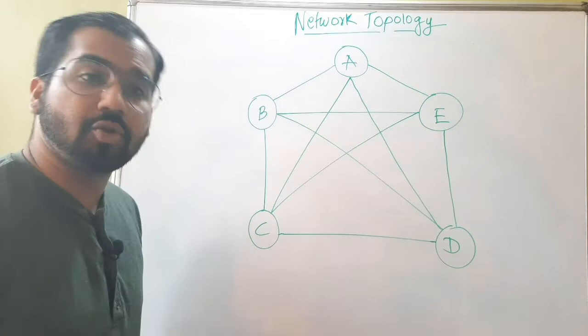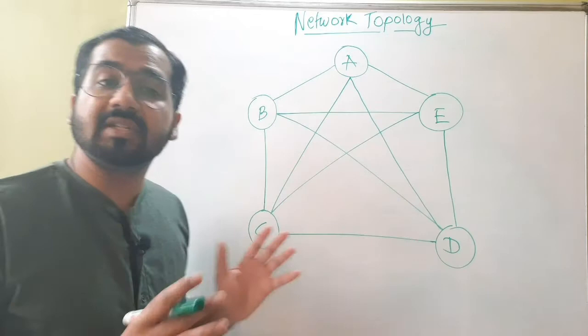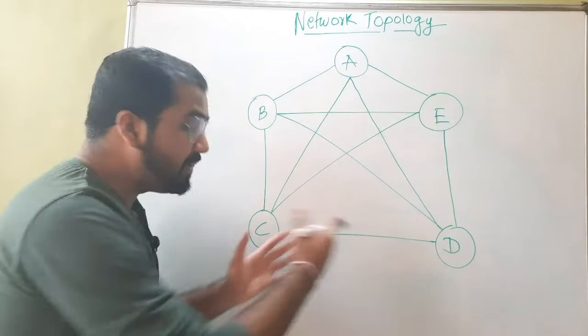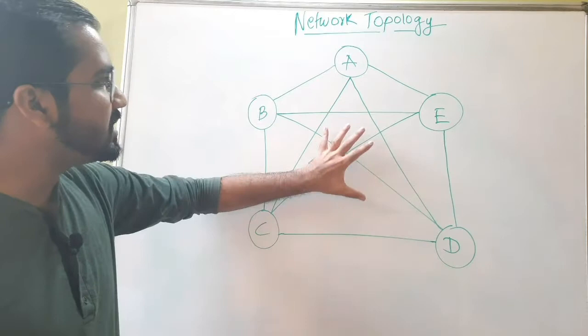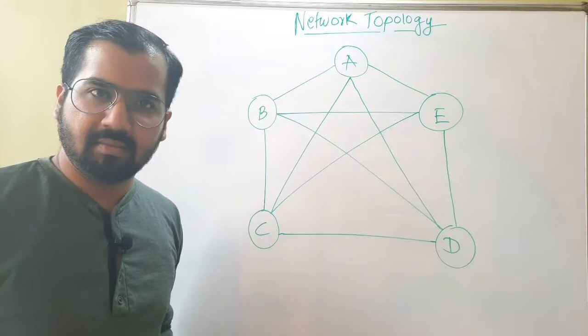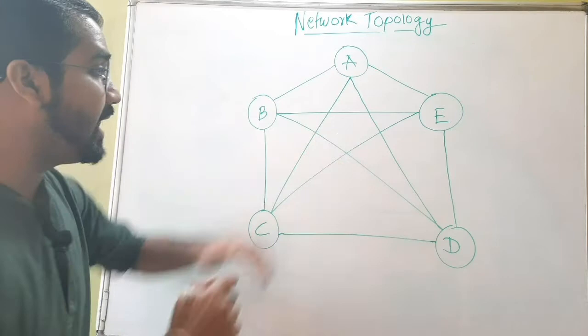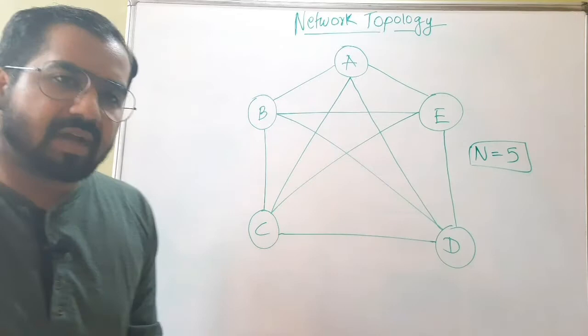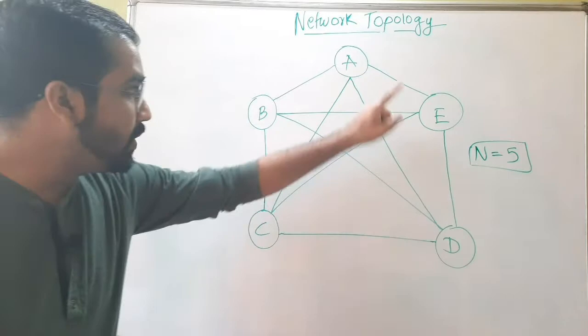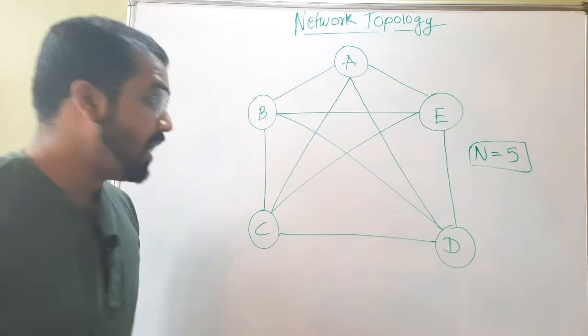From this visual, we can say that mesh topology is very complex — that is one disadvantage. It is really difficult to configure. Another disadvantage is the heavy cabling involved, which means a lot of cost. For example, when n equals 5 devices, you can already see how much cabling is required. Now if n increases — since a network can have thousands of nodes — the cabling count grows enormously.